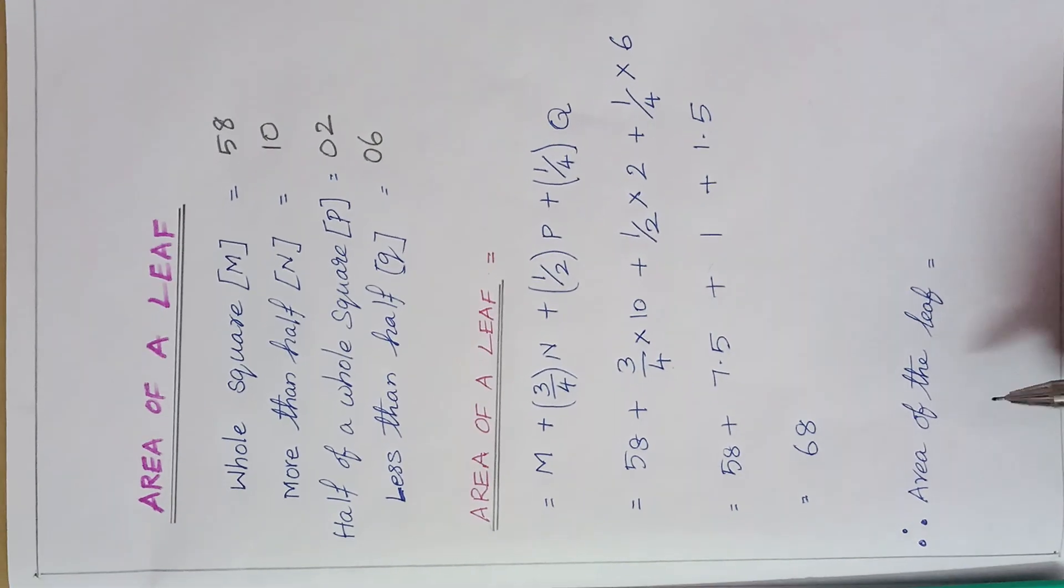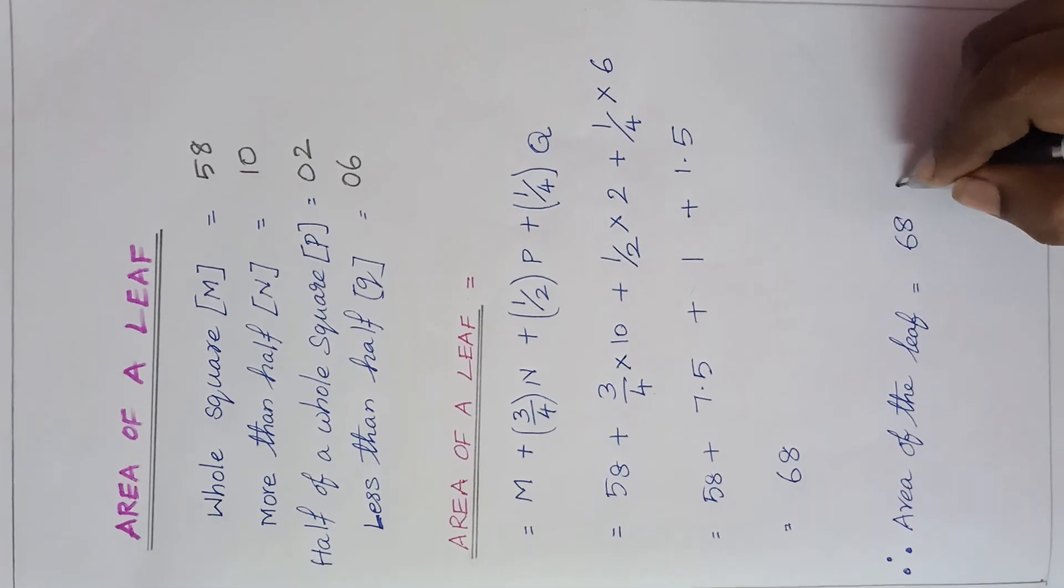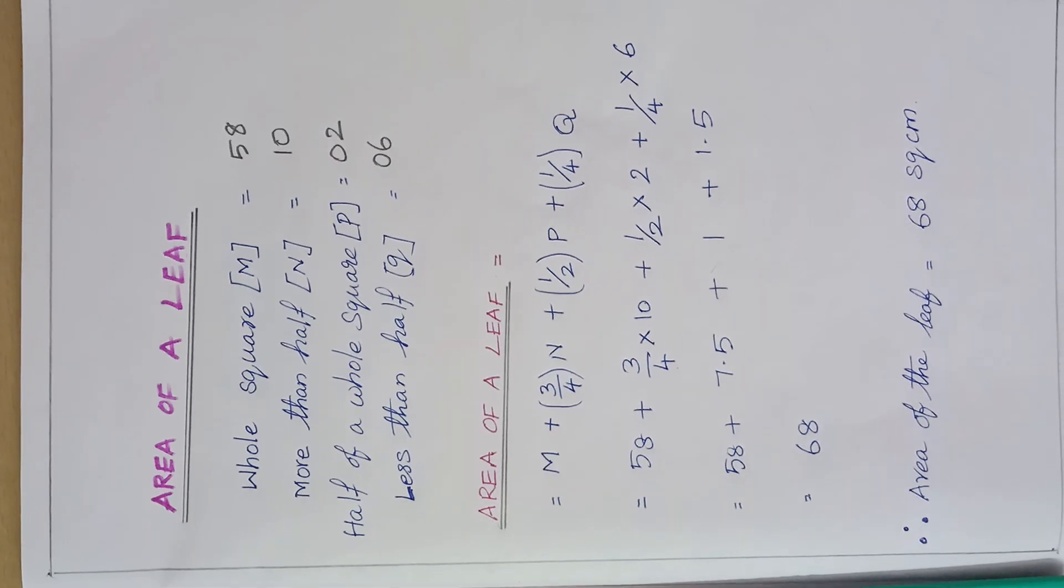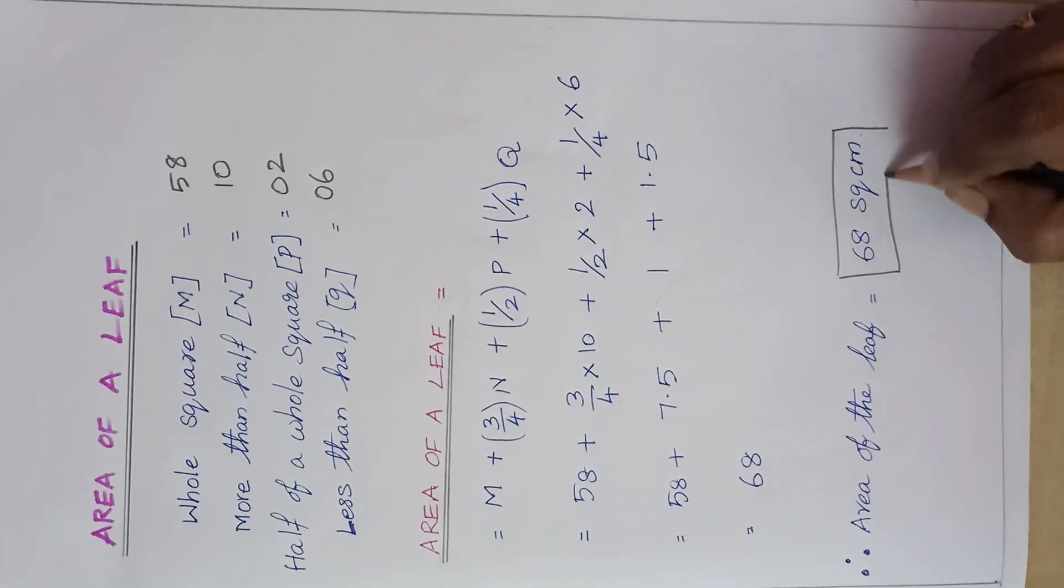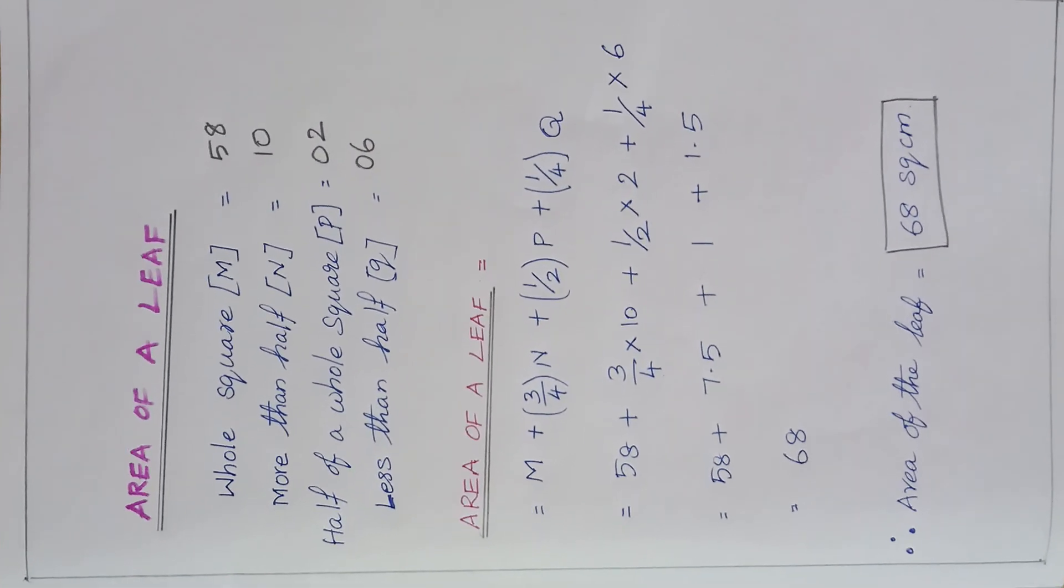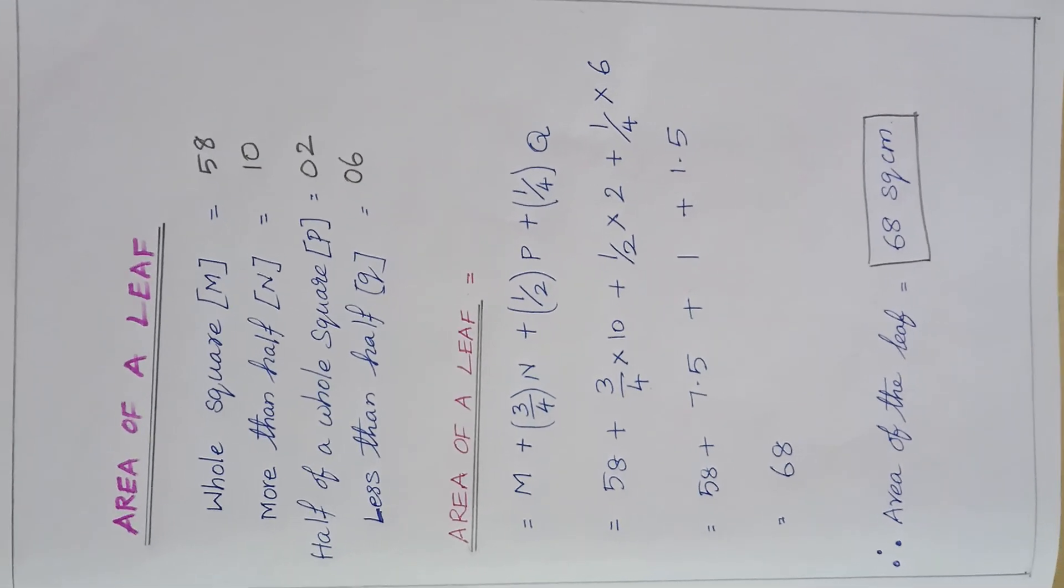So, therefore, the area of the leaf is equal to 68 square centimeter. So, at last we found out the area of the leaf. So students, go through the video once or twice for better understanding. Thank you, students.